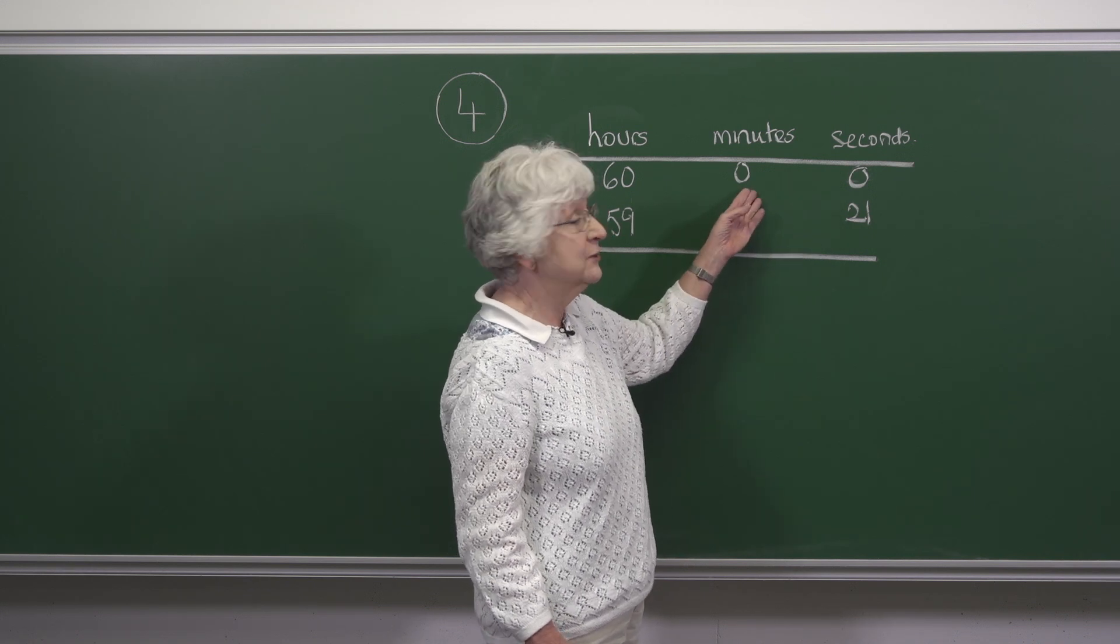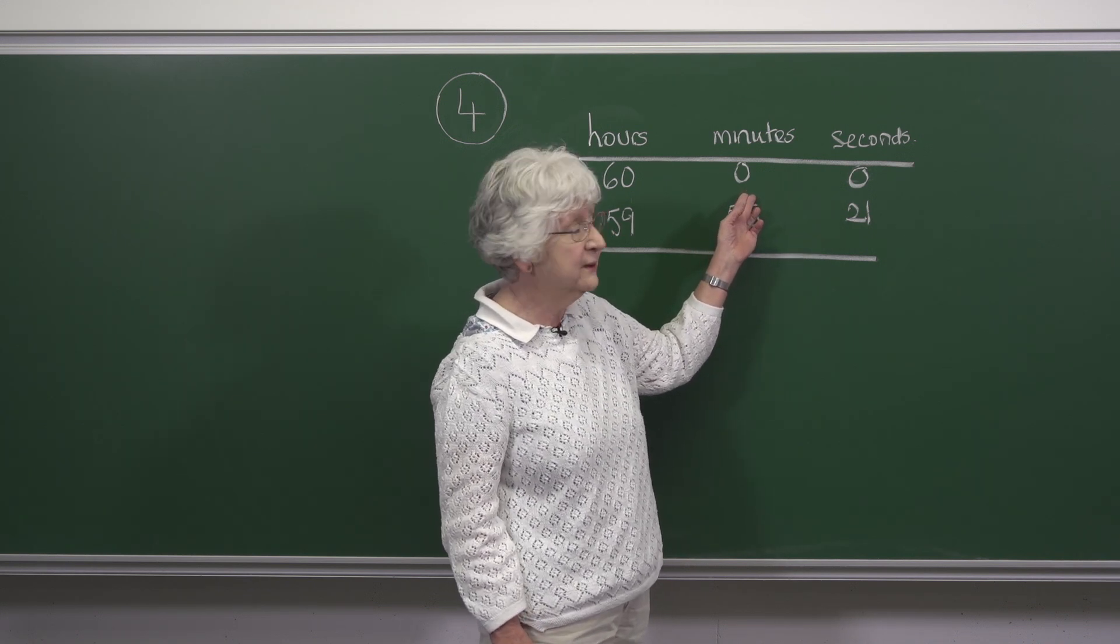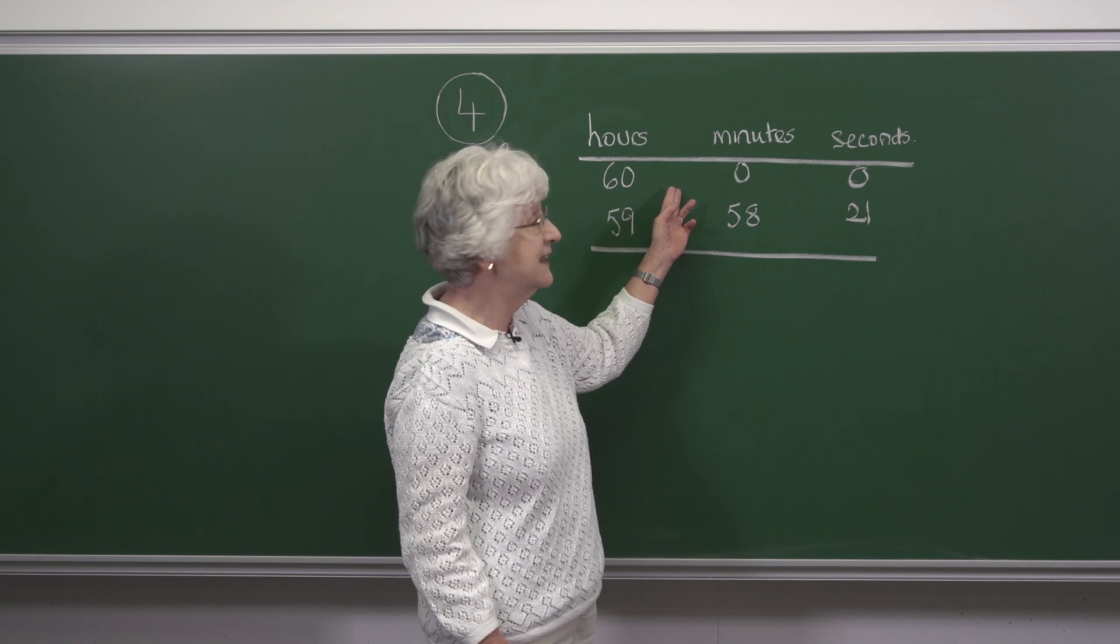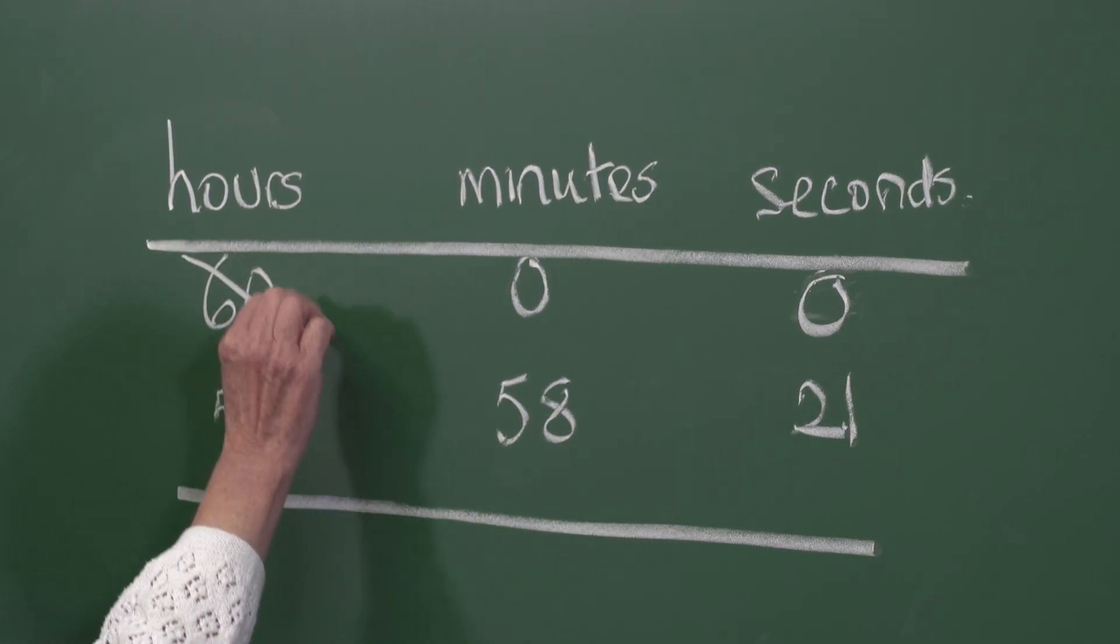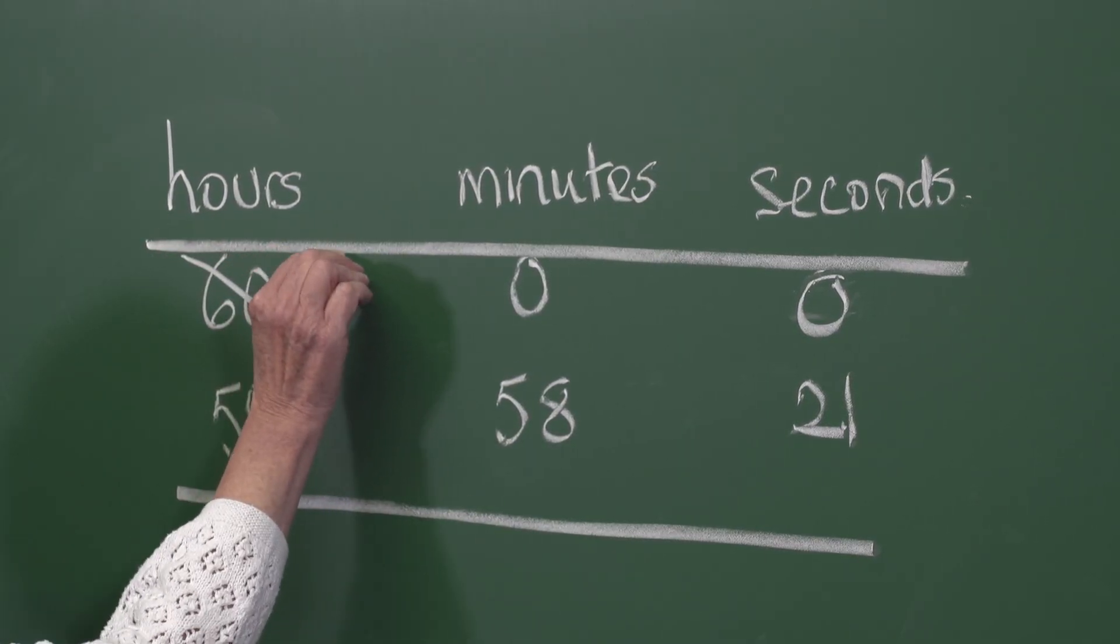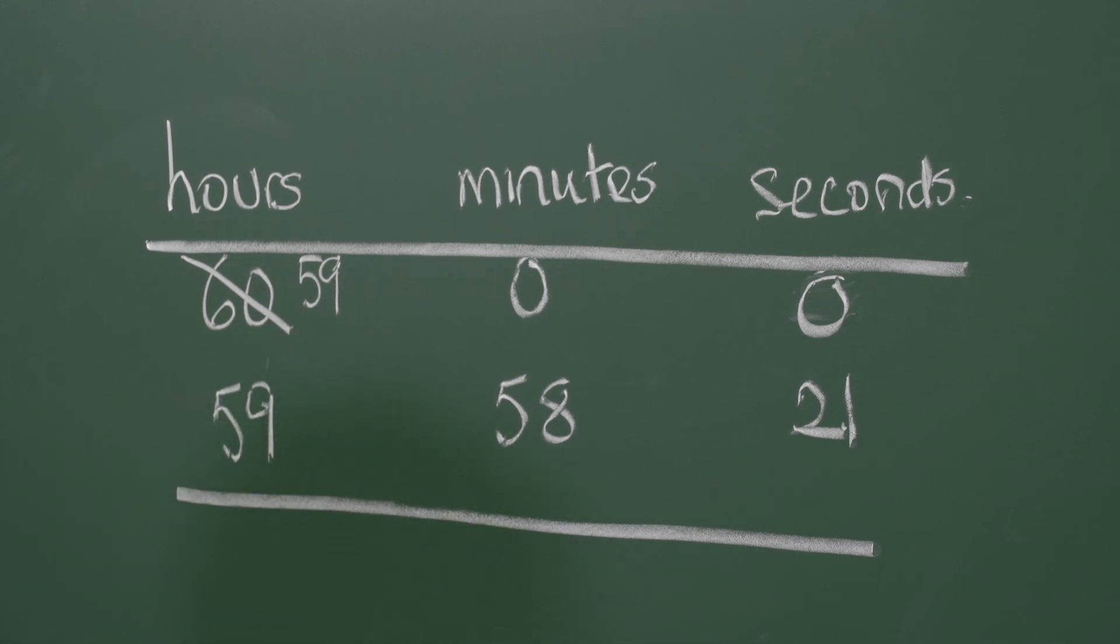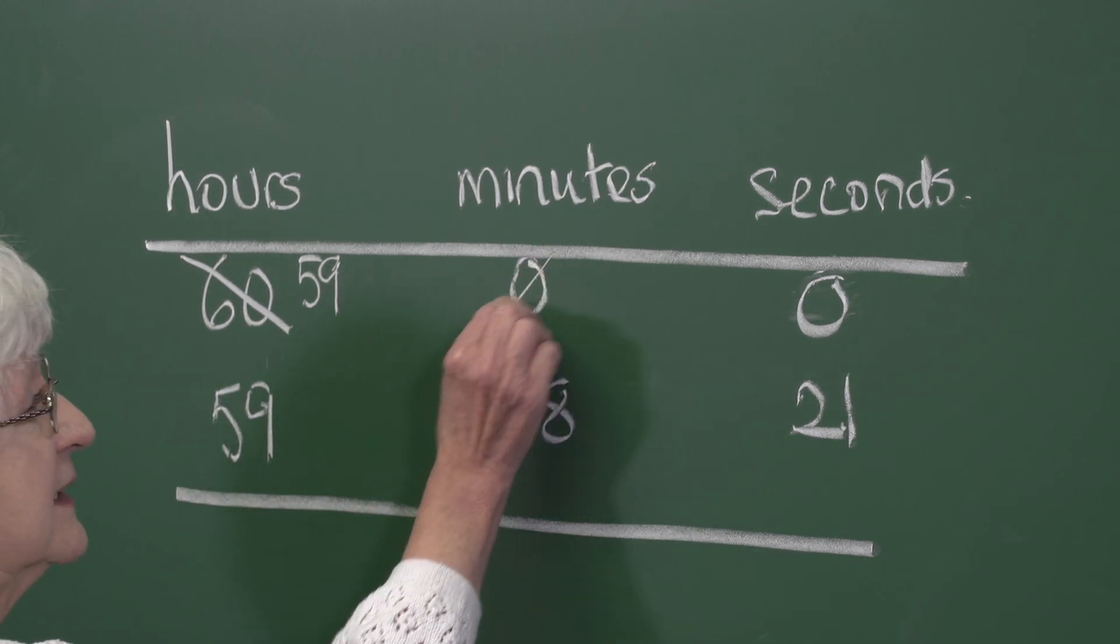We go next door but there's nothing there for us to take away, and so we go next door again and we subtract one from the hours. So 60 hours is 59 hours and 60 minutes.